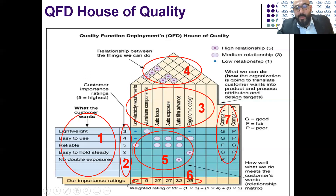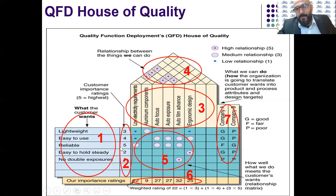After that, we could focus on number 27 — we have two with 27: auto focus and auto exposure. And then you could achieve the customer needs. How is this calculated? By multiplying three times one, plus four times one, plus five times three — that gives you 22. You do it column by column to find the calculation, and by this, you could achieve the customer needs.